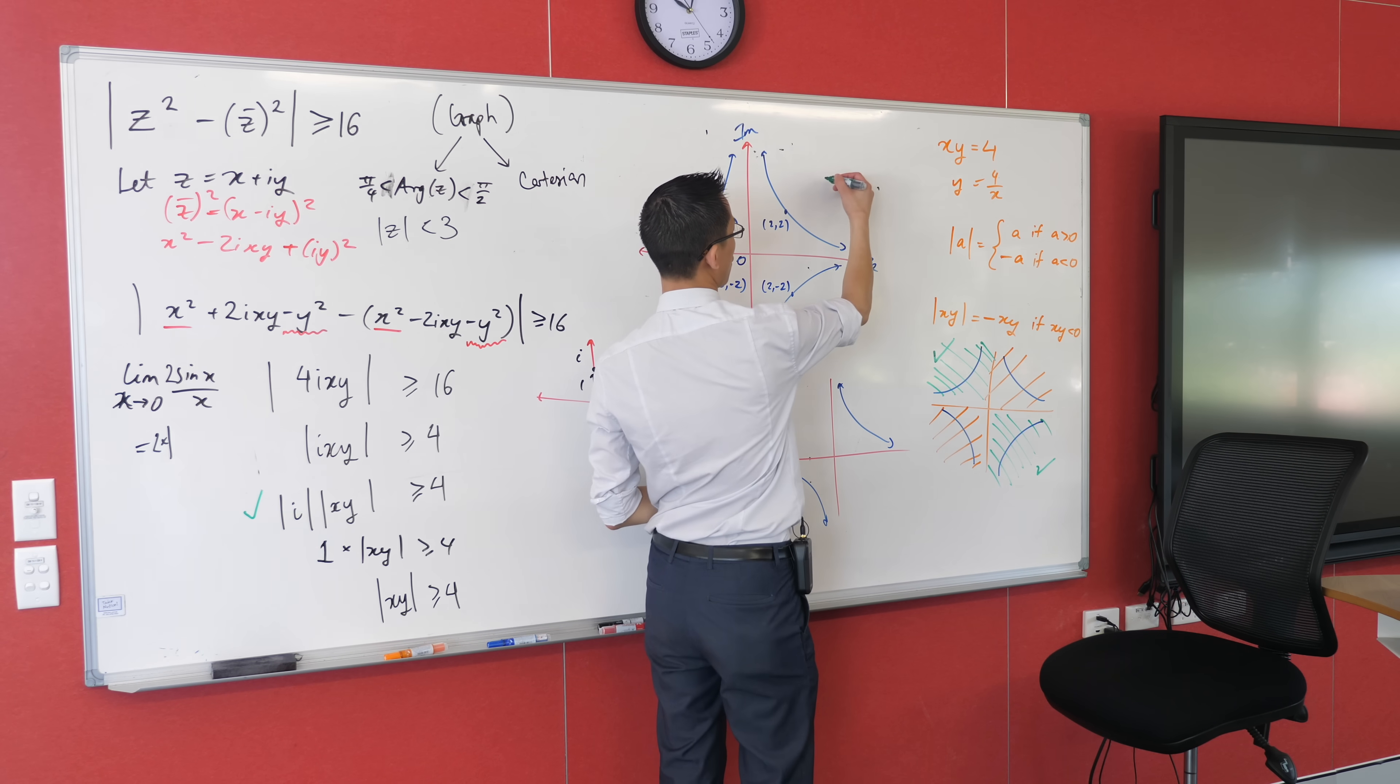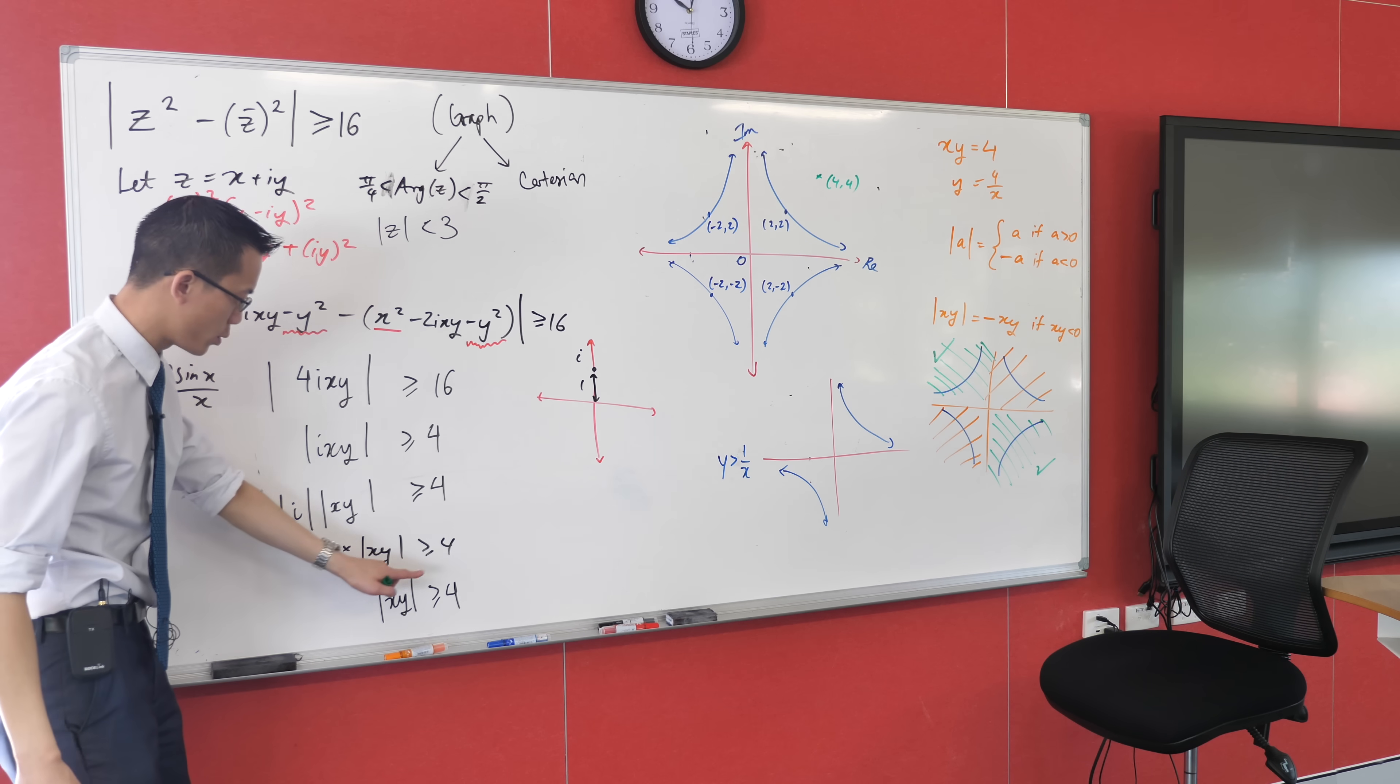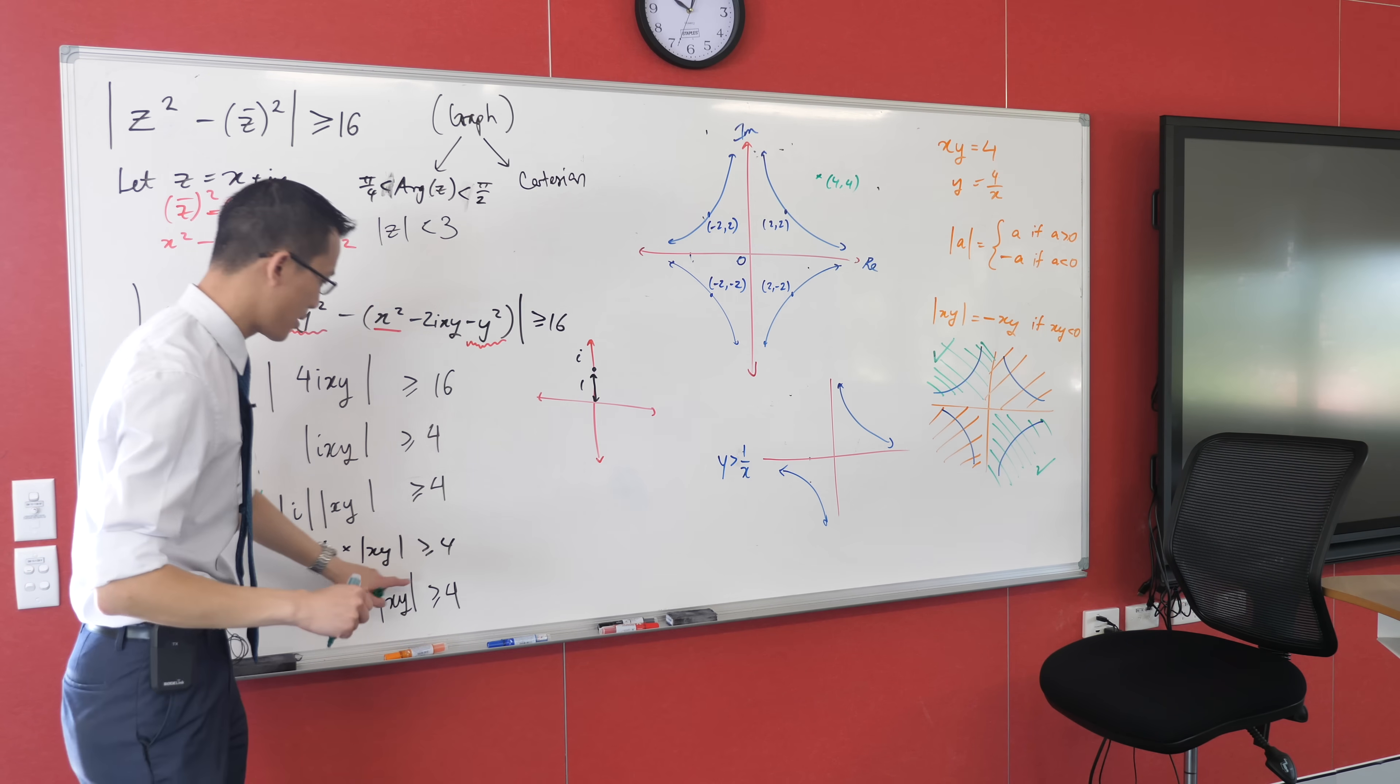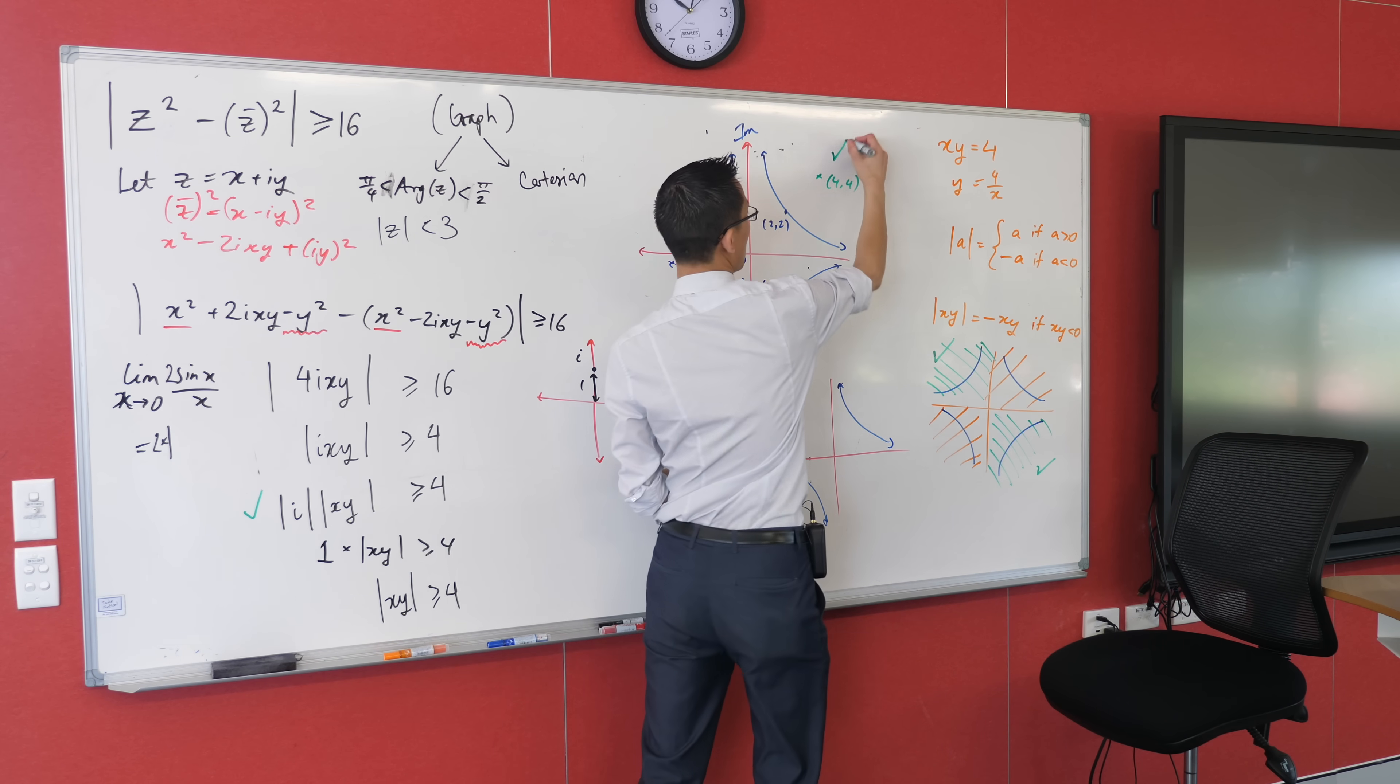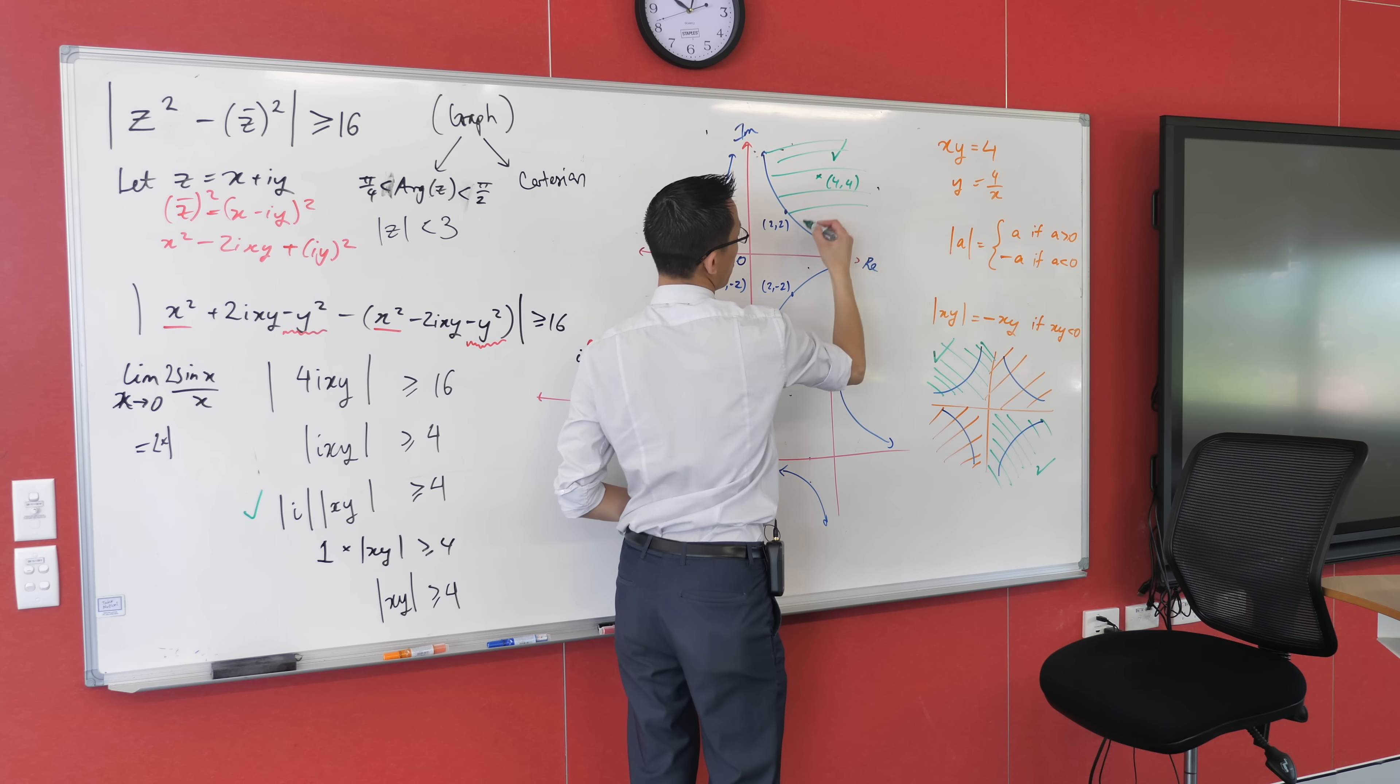So if I put in 4, 4, which means it's somewhere over here, if I throw that into the left-hand side here, I'm getting the absolute value of 4 times 4, which is 16. Is the absolute value of 16 satisfying this inequality? Cool, it is. So at the very least, I know over here is okay, right?